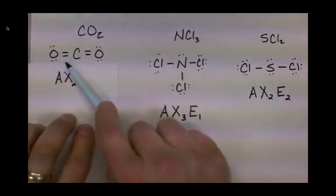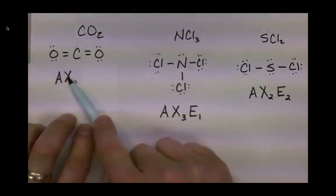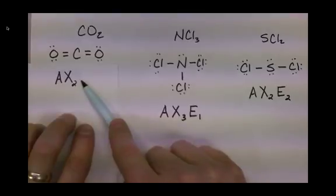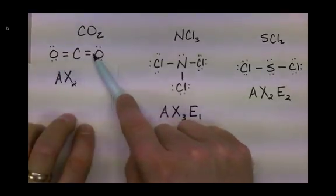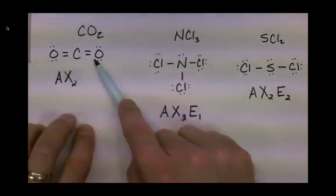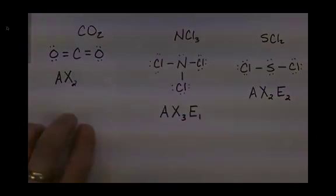For carbon dioxide, we only have a total of two things on the central atom — in this case, that would be the two atoms. That's our VSEPR notation.